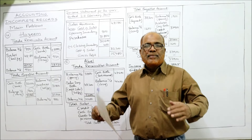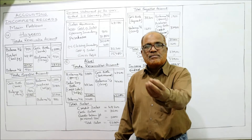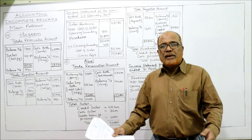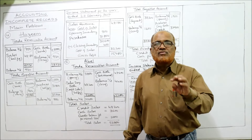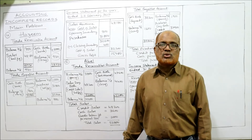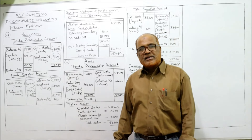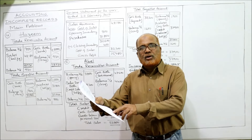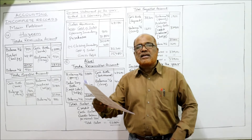Cash banked of 3,600 represents cash sales deposited into the bank. The 2,000 taken by the owner for personal use is called drawings. So cash sales were 3,600 plus 2,000 equals 5,600 total, with 2,000 taken as drawings and 3,600 banked. Payments to suppliers were 38,200.